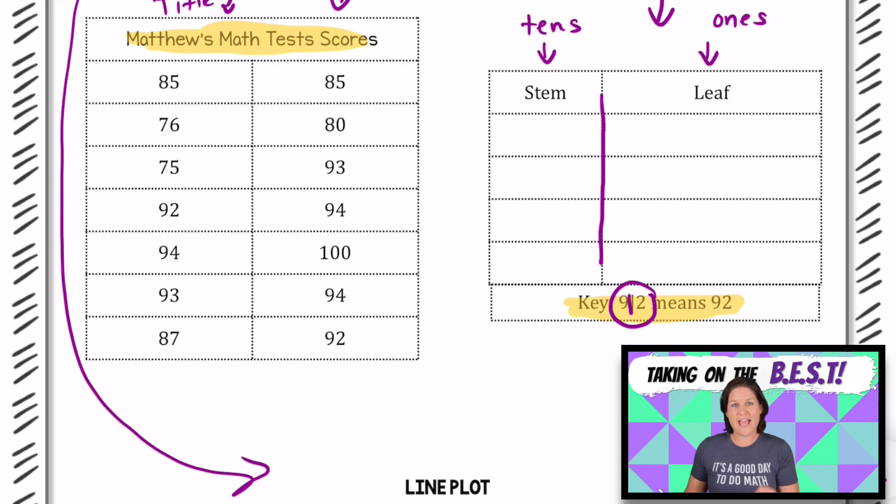For the stem, we need to start in order. What is the smallest 10 that you see, the smallest number in the tens place? I see 7. We've got 76 and 75. So we're going to place the stem, the digit in the tens place right there. That 7 represents 70. And over in the leaf, we see 5 for 75 and we see 6 for 76. Let's put check marks so we know that we've placed it onto our stem.